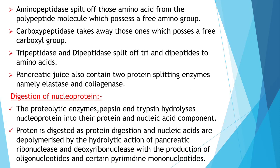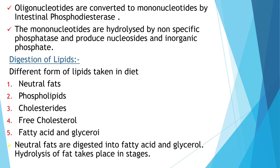Digestion of nucleoprotein: the proteolytic enzymes pepsin and trypsin hydrolyze nucleoproteins into their protein and nucleic acid components. Protein is digested as in normal protein digestion, and nucleic acids are depolymerized by the hydrolytic action of pancreatic ribonucleases and deoxyribonucleases, producing oligonucleotides and certain pyrimidine mononucleotides. Oligonucleotides are converted to mononucleotides by intestinal phosphodiesterase; mononucleotides are hydrolyzed by non-specific phosphatase, producing nucleosides and inorganic phosphate.